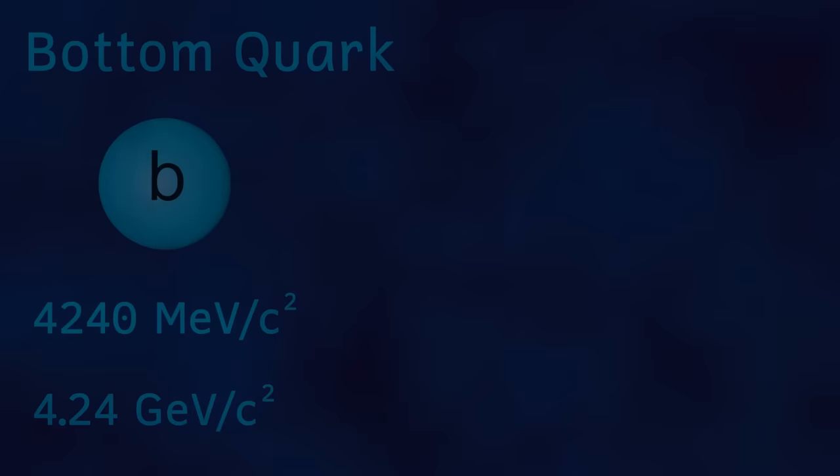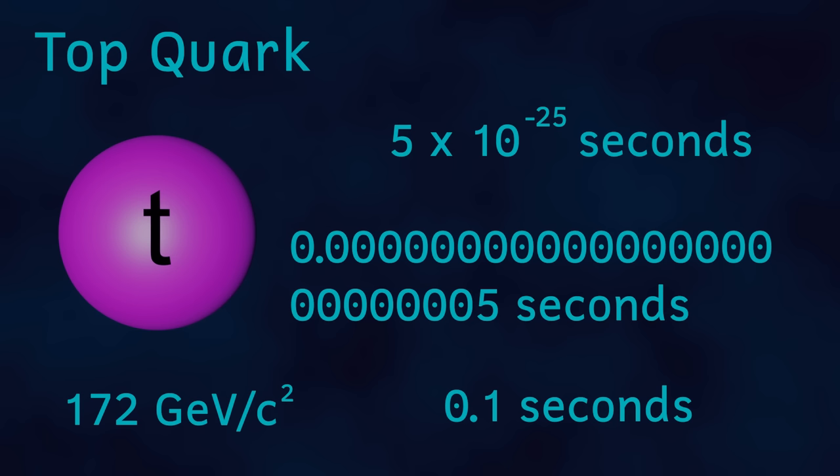Finally, we have the largest of all the fundamental particles, called a top quark. This weighs in at a whopping 172 giga electron volts per c squared. This is more than 172 times more massive than a proton. It's been calculated that these particles exist for only 5 times 10 to the minus 25 of a second. That's this much of a second. When you consider that an eye blink takes this much time, we can see how seriously brief these particles' lifetimes are.